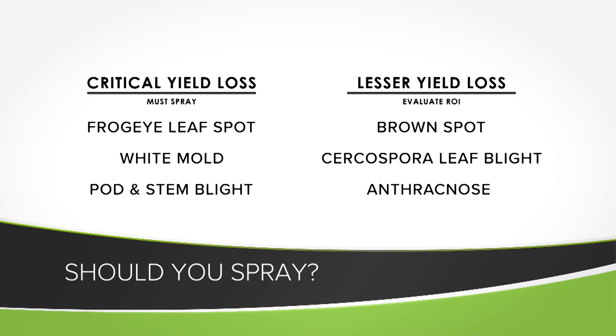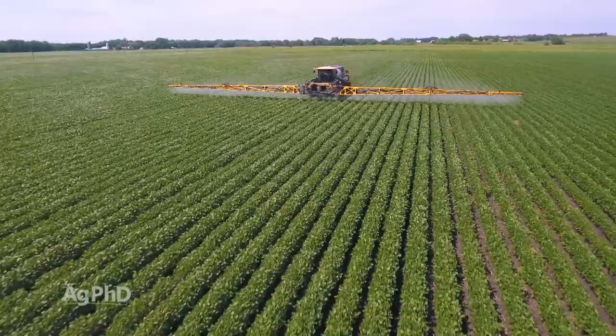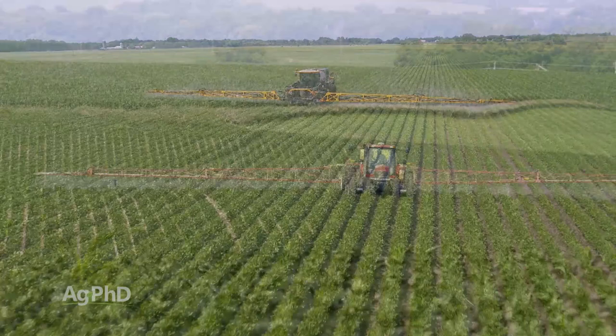The good news with all these diseases is they're fungal, so you can use fungicides. The big thing is you have to use multiple modes of action because some diseases, like frogeye, are resistant to the strobes — products like Headline and Quadris. Those are very popular ones, so make sure you're using at least a two, if not three, mode of action product to cover yourself. Chances are there's more than one disease happening out in your field, so make sure you're covering yourself with multiple modes of action.